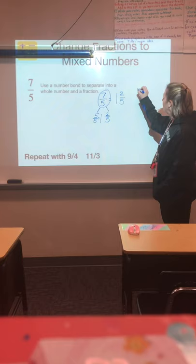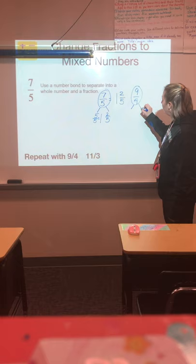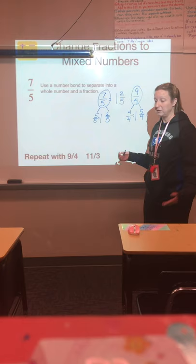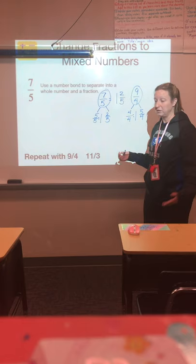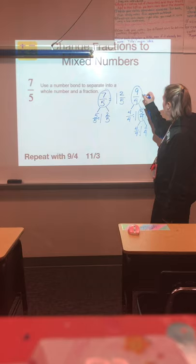Okay, let's do the same thing with nine fourths. How many fourths make one whole? Four fourths. So when we pull out four fourths, that leaves us with five fourths. We'll notice five fourths is greater than four fourths. So we can pull out another four fourths here, which leaves us with one fourth left over. So that's one, two, and one fourth.